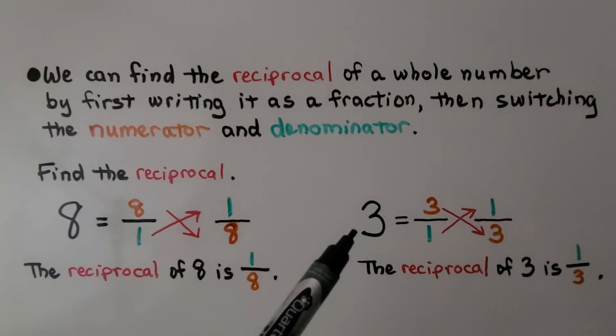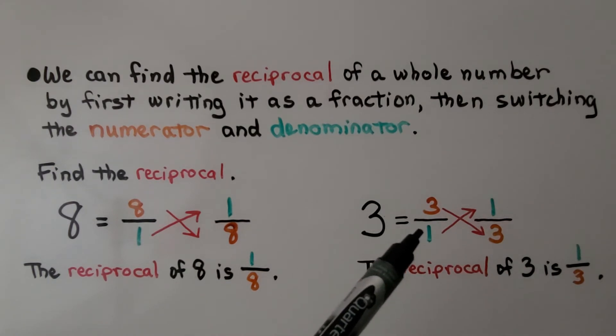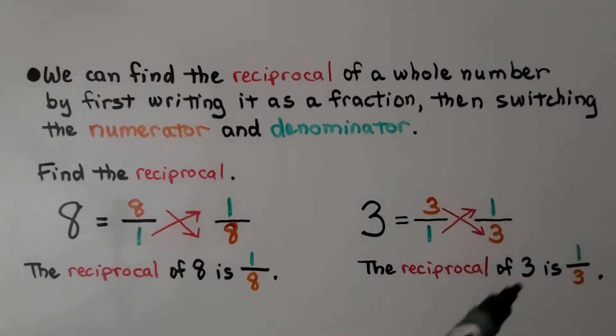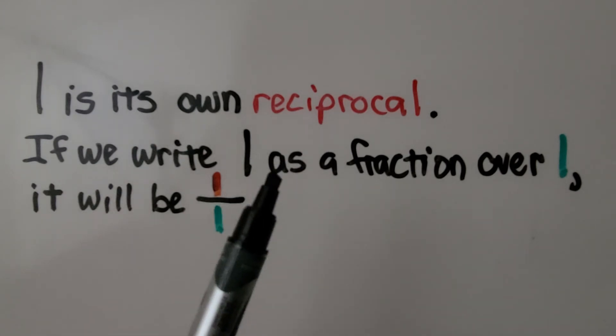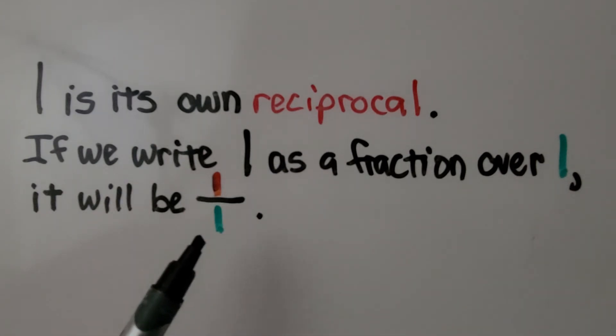For the whole number 3, we write it as a fraction over 1 for a denominator. We switch their places, and the reciprocal of 3 is 1/3. 1 is its own reciprocal. If we write 1 as a fraction over 1 for a denominator, we'll have 1 over 1. That's equal to 1. It's its own reciprocal.